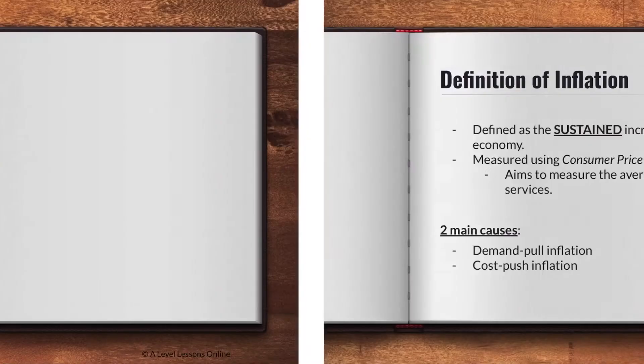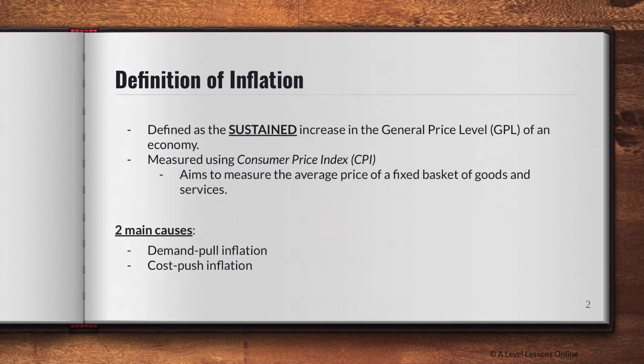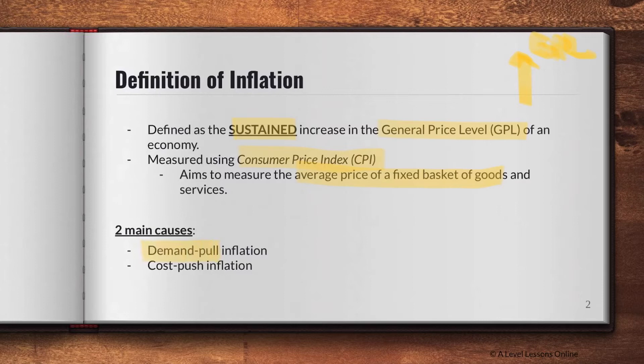First things first, we need to go through the definition of inflation. Inflation is defined as the sustained increase in the GPL — the general price level — which is your Y-axis, of an economy. It is measured using the Consumer Price Index, or CPI. This basically aims to measure the average price level of a fixed basket of goods and services that increases over time in an economy.